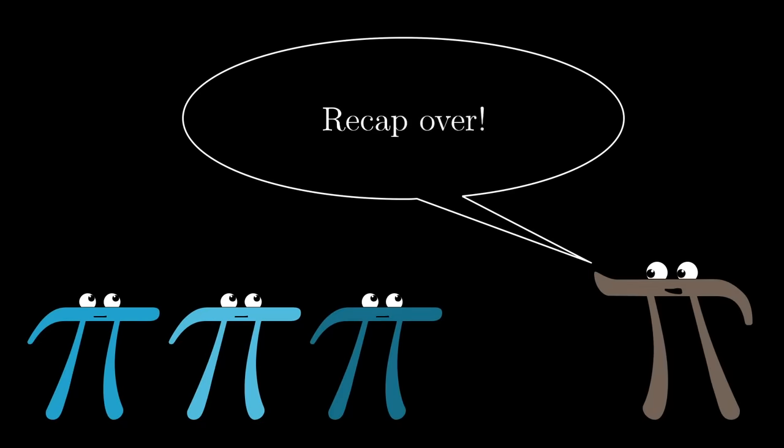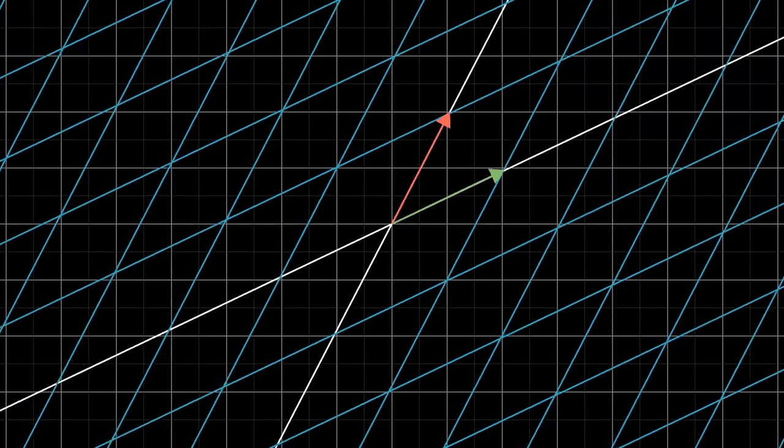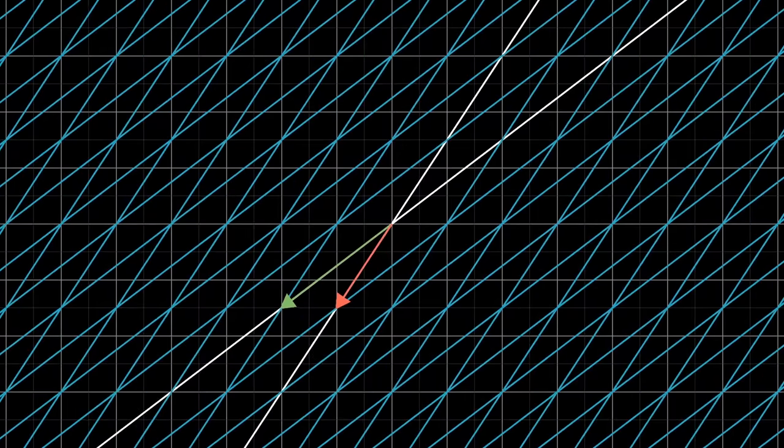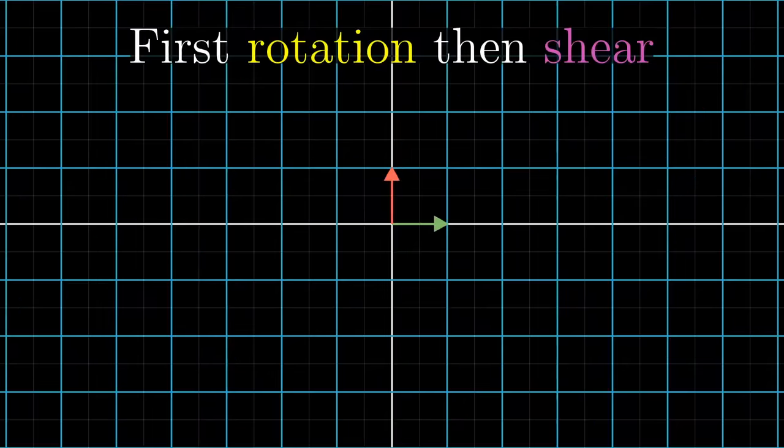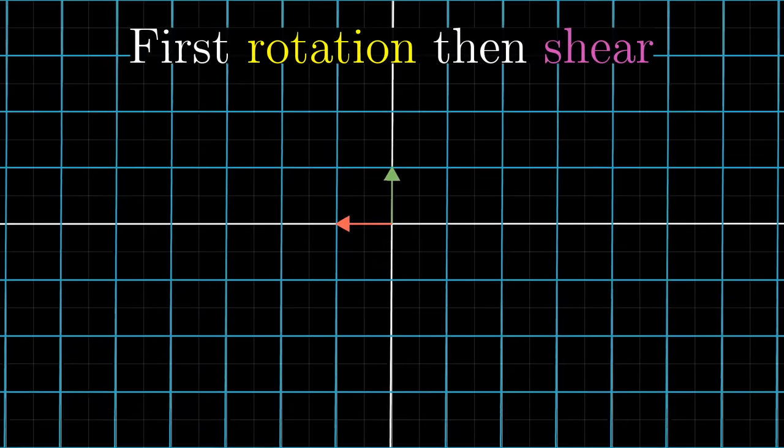Alright, recap over, on to the new stuff. Often times, you find yourself wanting to describe the effects of applying one transformation and then another. For example, maybe you want to describe what happens when you first rotate the plane 90 degrees counterclockwise, then apply a shear.